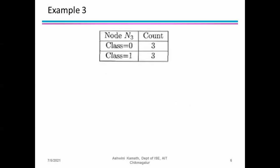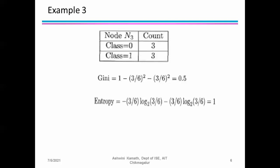Example 3: Consider node N3 where class 0 has count 3 and class 1 has count 3 — it has a high degree of impurity. Total count is 6, with 50% for each class. Gini index = 1 − (3/6)² − (3/6)² = 0.5. Entropy = −(3/6)·log₂(3/6) − (3/6)·log₂(3/6) = 1.